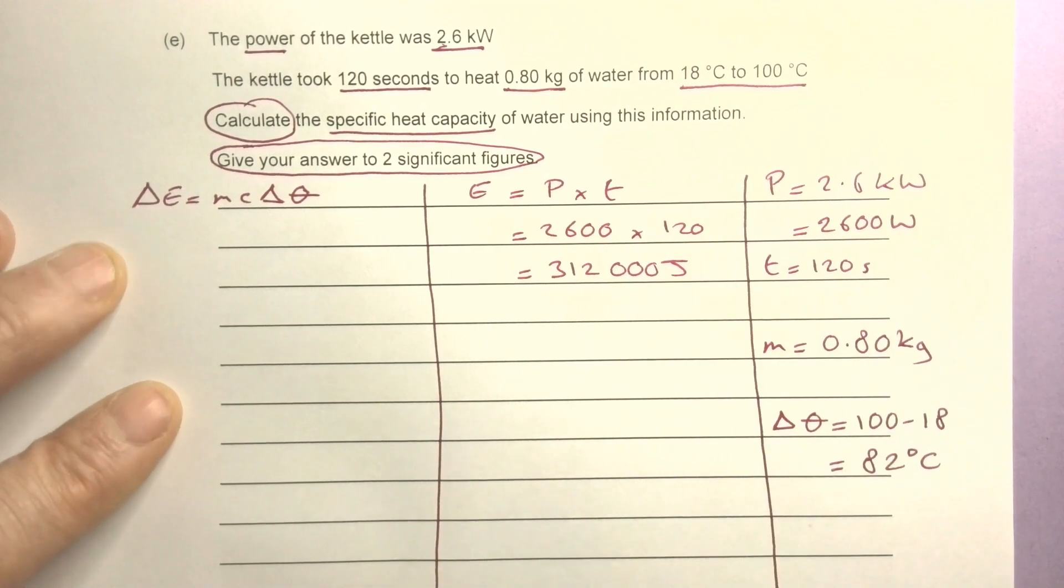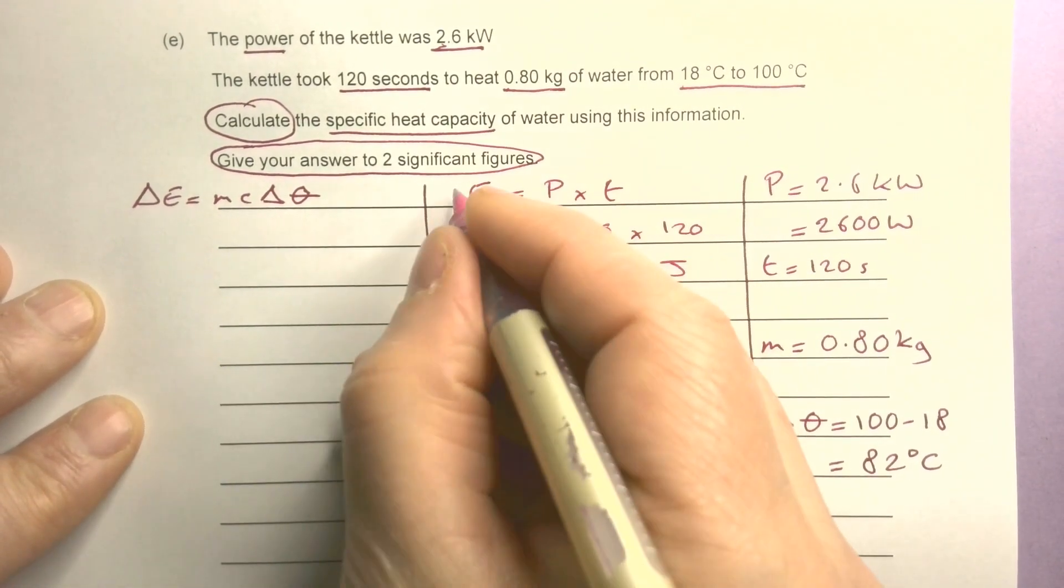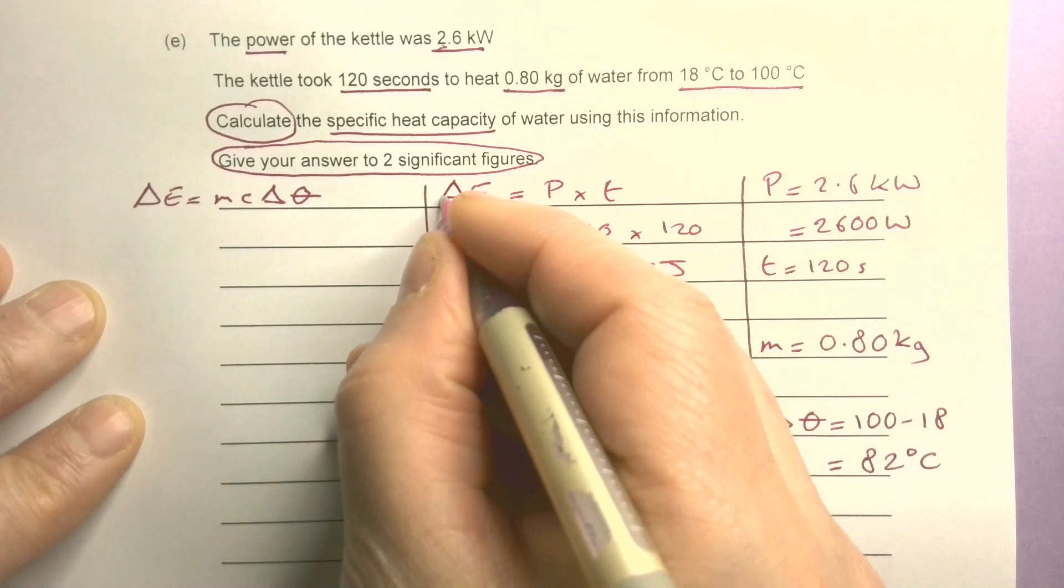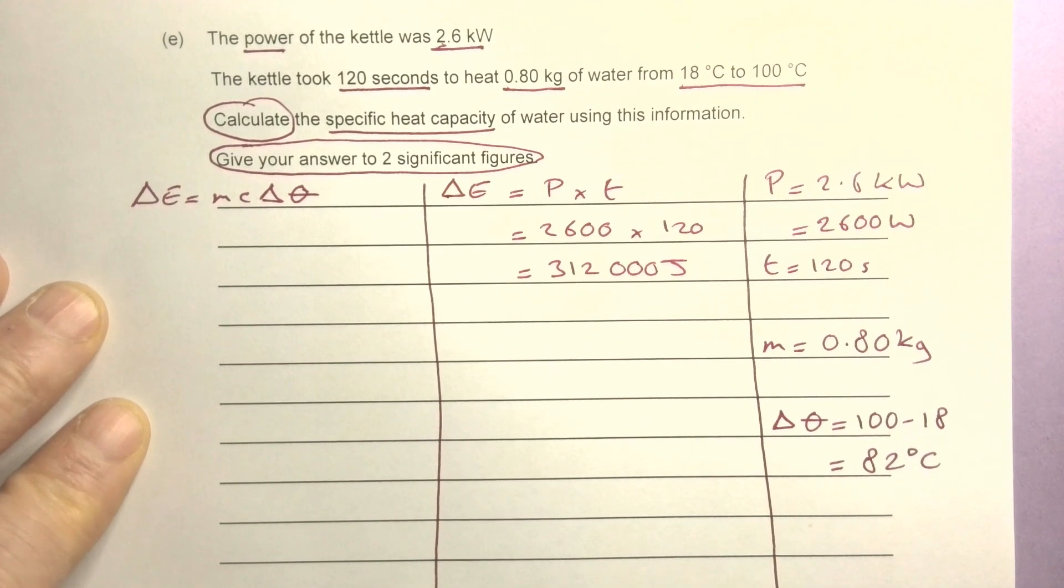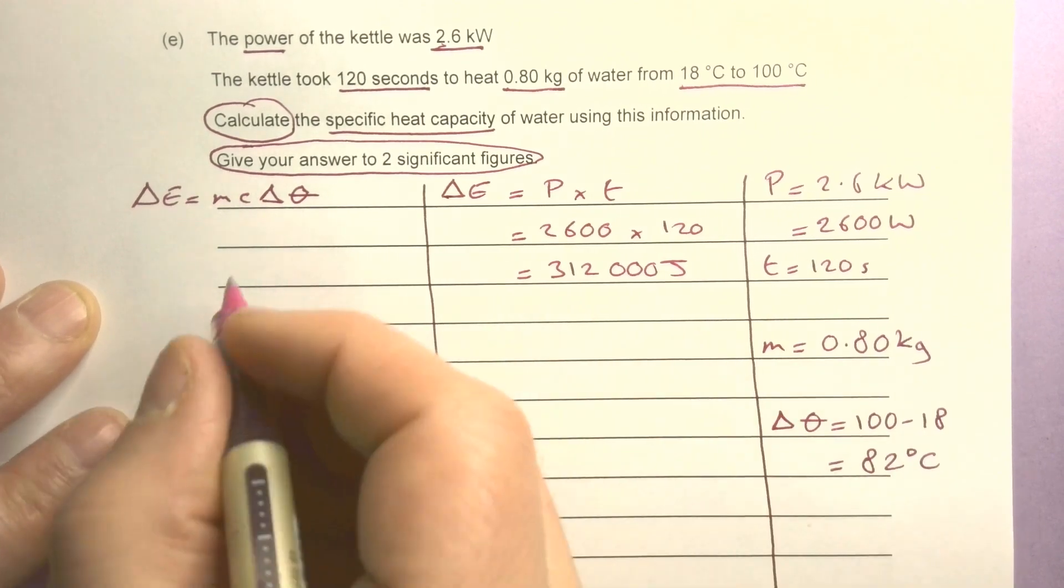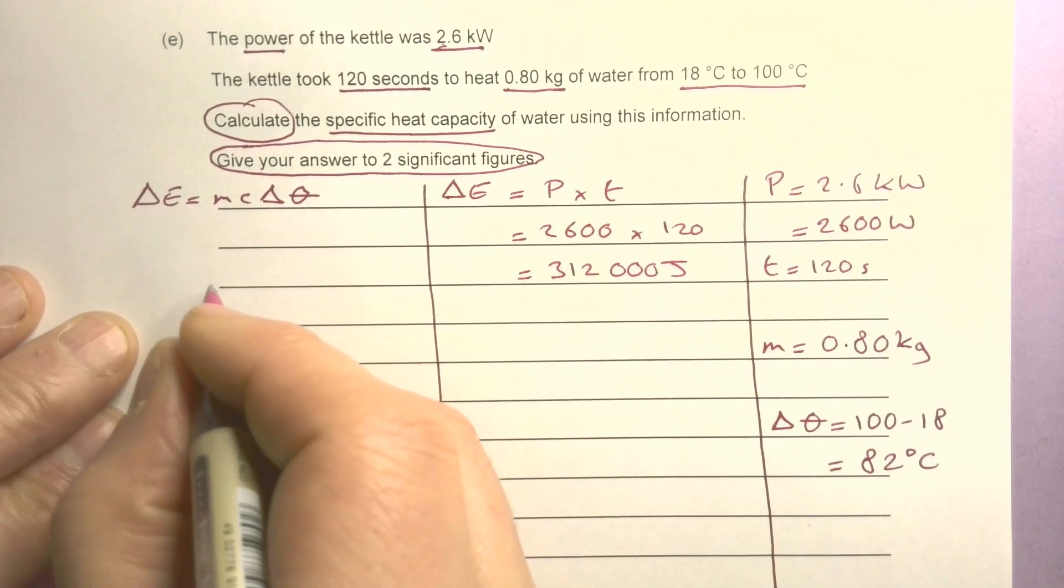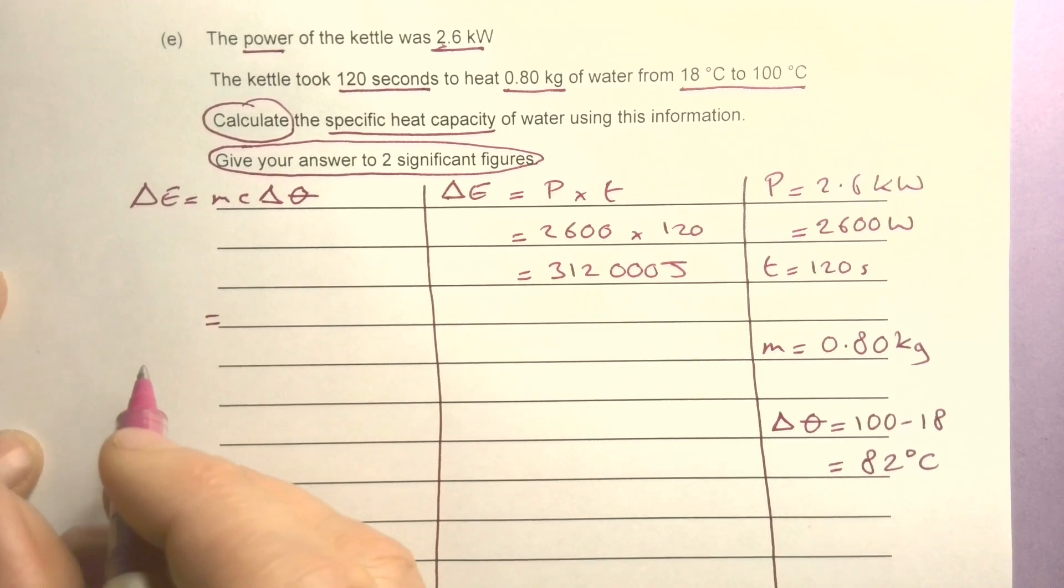That's all my variables and I've already started working out my ΔE. Remember, delta just means change in - that's all it means. So I can say that's my change in energy.